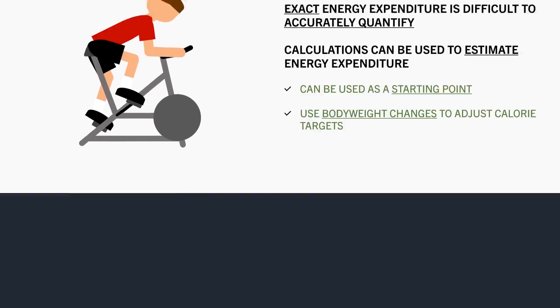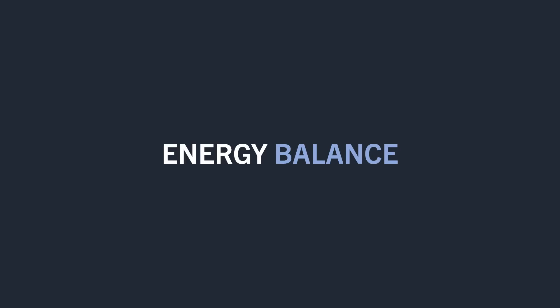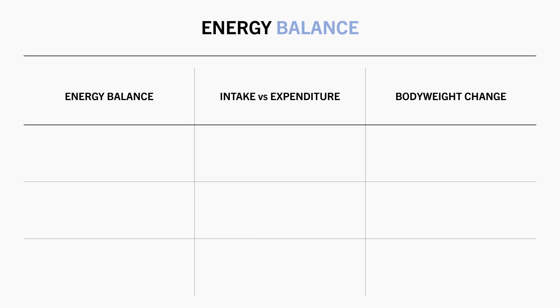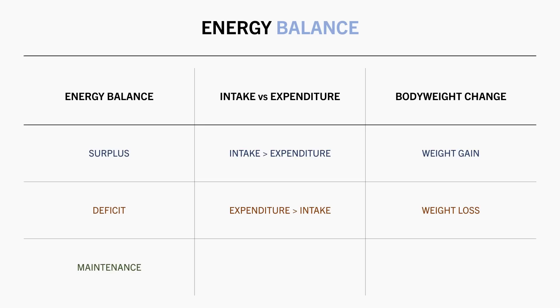The next factor determining how many calories we should consume is what energy balance state we are aiming for — are we trying to be in a calorie surplus to gain weight, a deficit to lose weight, or maintenance to maintain body weight? To gain weight over time, we need to eat more calories than we expend. To lose weight over time, we need to eat fewer calories than we expend, and to maintain weight, we should intake the same number of calories as we expend.